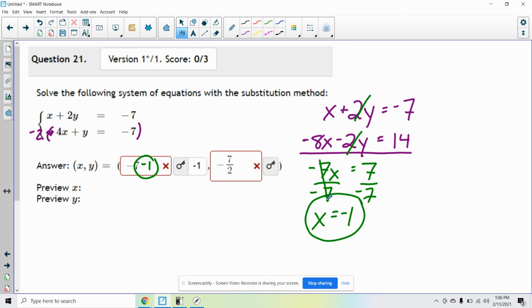And then I need to figure out what y is, so I can take negative 1, plug it back into either equation. I'll plug it back into the first one: x which is negative 1 plus 2y equals negative 7. I'm going to add 1 to both sides so I get 2y equals negative 6, divided by 2 I get y equals negative 3.